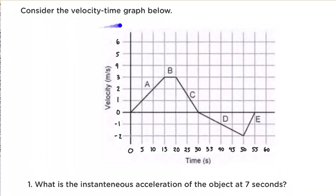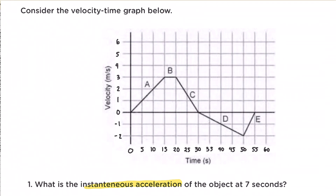Consider the velocity-time graph below. We are asked: what is the instantaneous acceleration of the object at seven seconds? When we say instantaneous acceleration, it simply means the acceleration of the object at a specified time, or at a given moment in time. So in this case, we need to solve for the acceleration of the object at seven seconds.